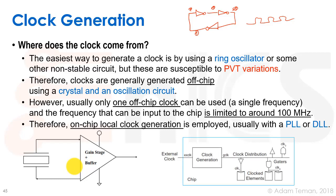Usually we can only use one crystal and one off-chip clock because they take up a lot of room on the board. So we get one single frequency and we may need several frequencies on the chip. Not only that, the frequency is usually limited to around 100 megahertz because it's hard to drive that clock onto the chip.